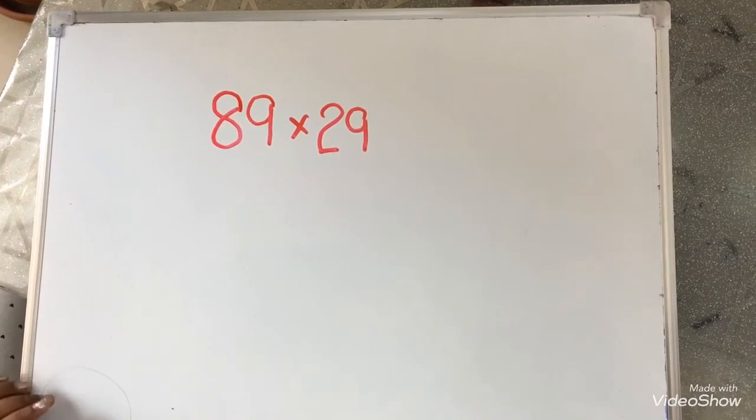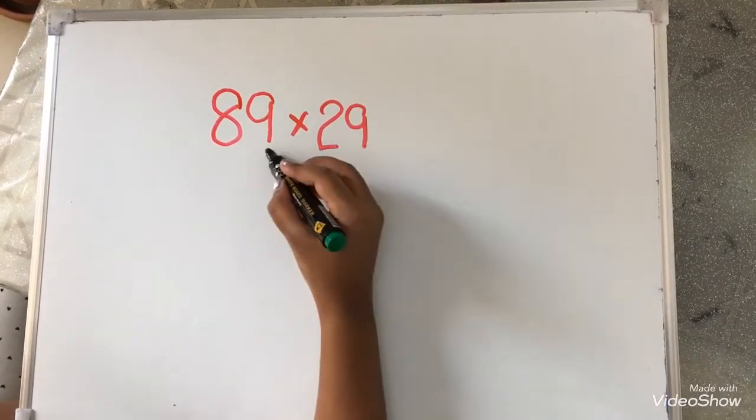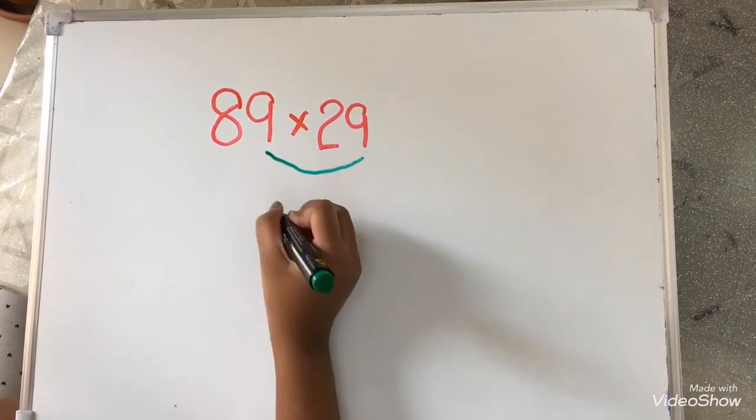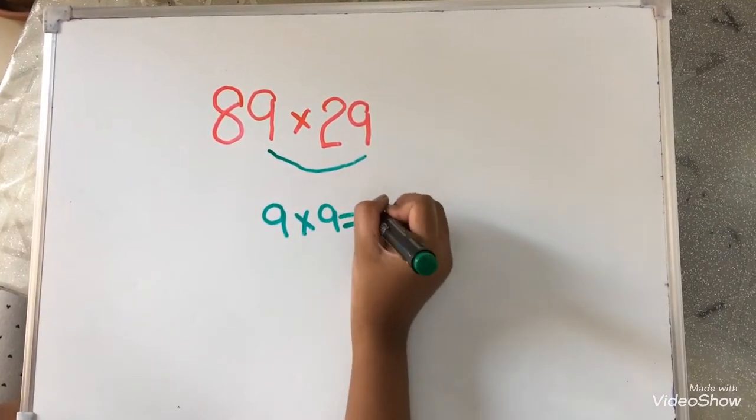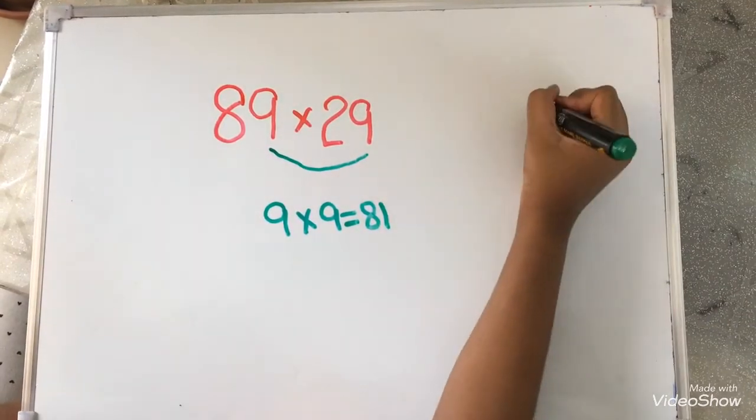Now, I am going to multiply 9 into 9. So, 9 into 9 equals to 81. I am going to write 81 over here.